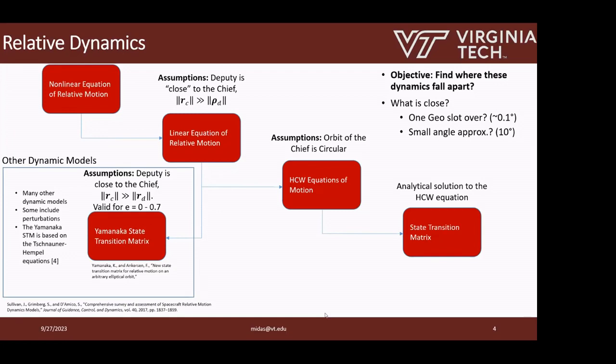There are many people who have taken these base dynamics and expanded their uses to include things like J2 perturbations and atmospheric drag. Specifically, the Yamanaka state transition matrix is a derivation of the linear equations of relative motion that uses true anomaly as the dependent variable and allows you to model orbits with a chief eccentricity up to 0.7 with a state transition matrix — which is huge — but it's not an easy state transition matrix to code up and use; it's pretty clunky.